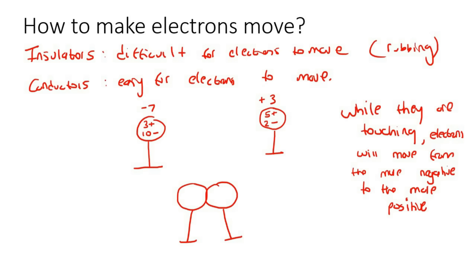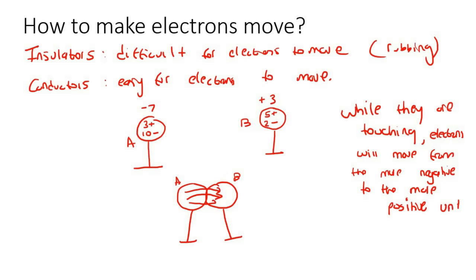So which one is more negative? Ball A is more negative, with a charge of negative seven. So the electrons are going to go from A to B, and they will keep moving from A to B until the amount of charge on both objects is exactly the same.